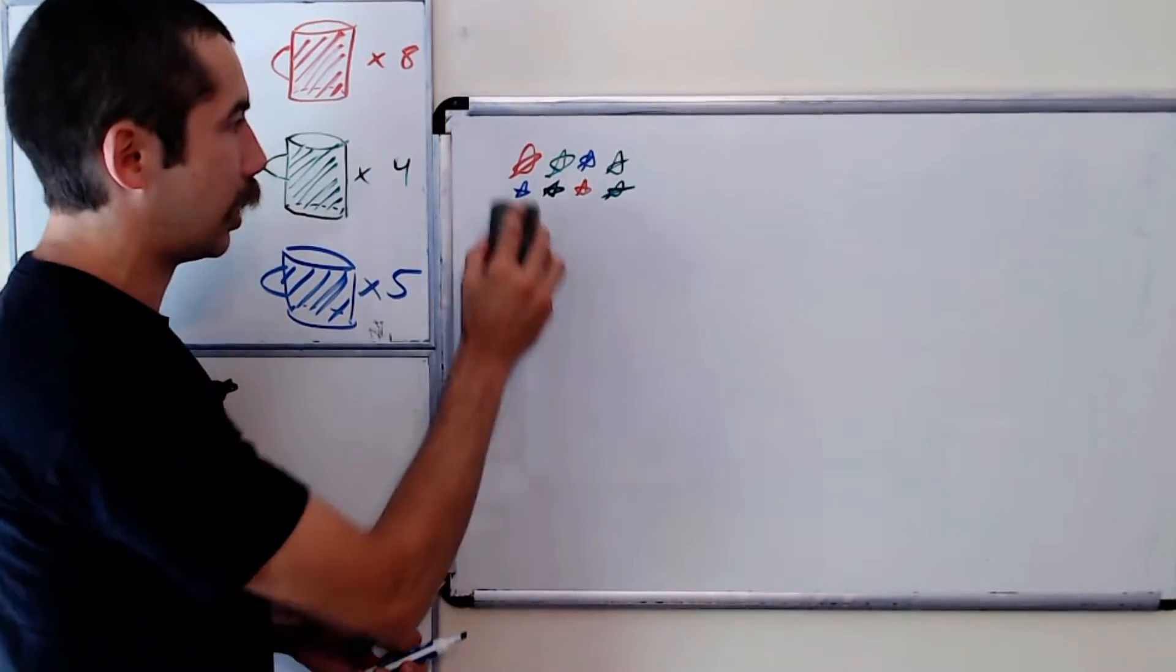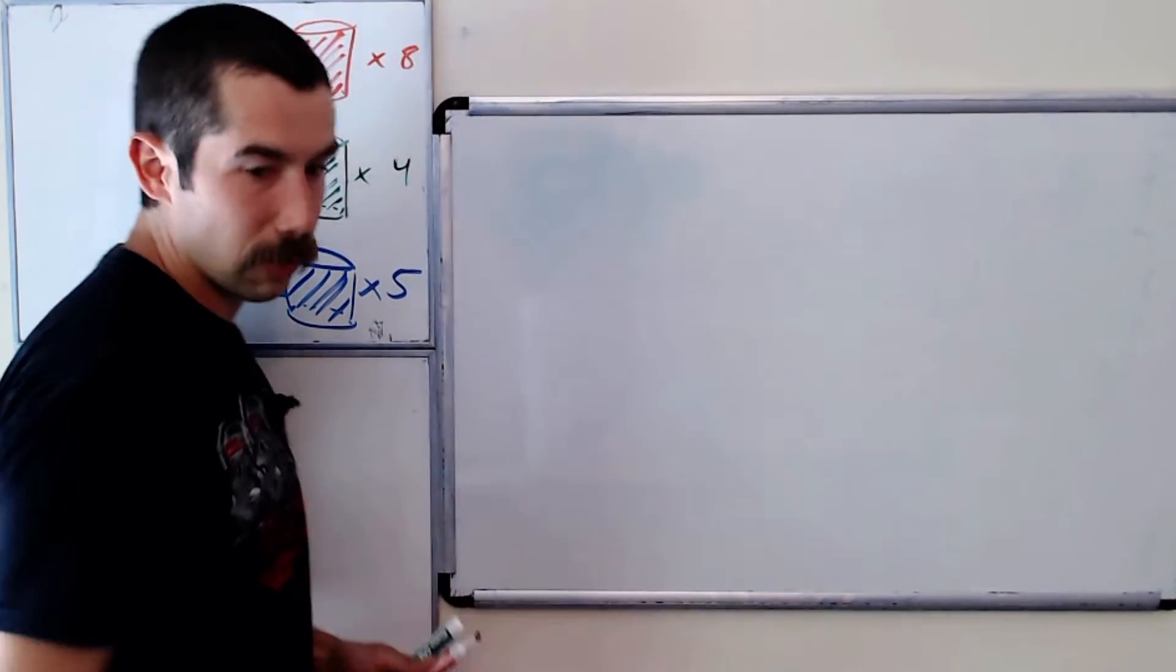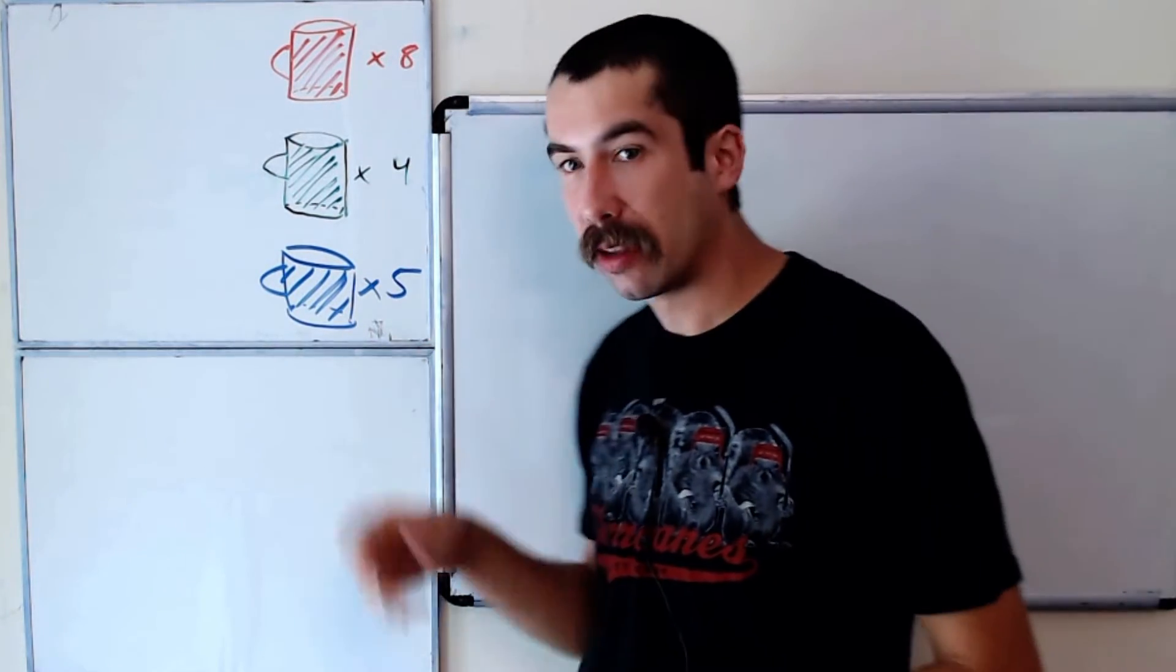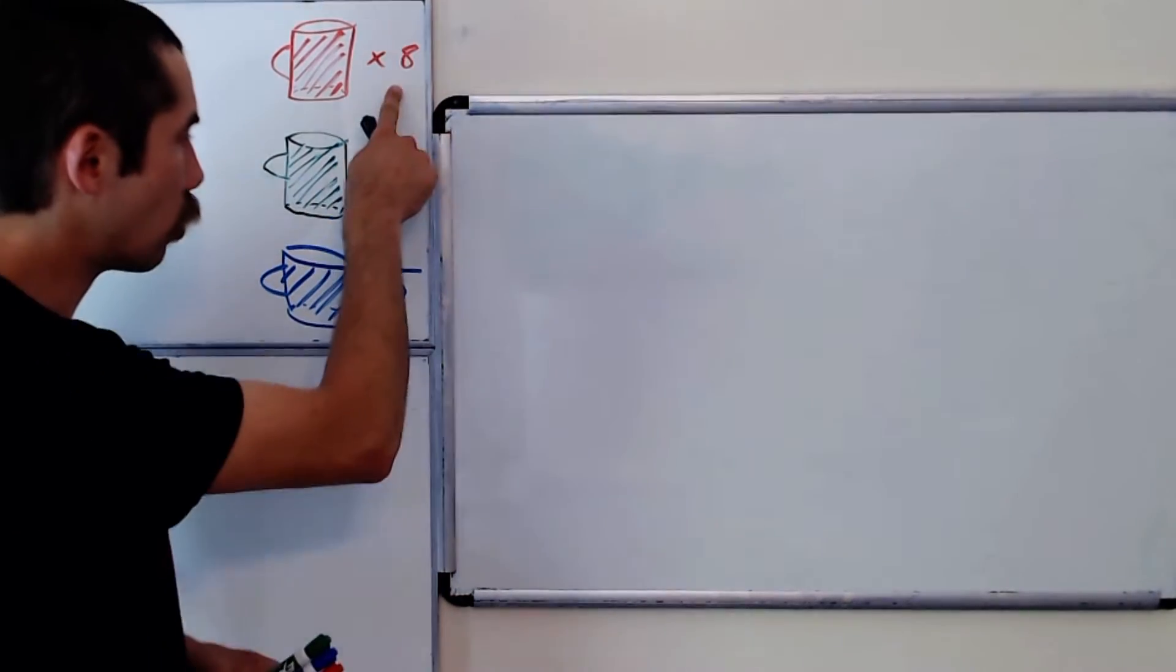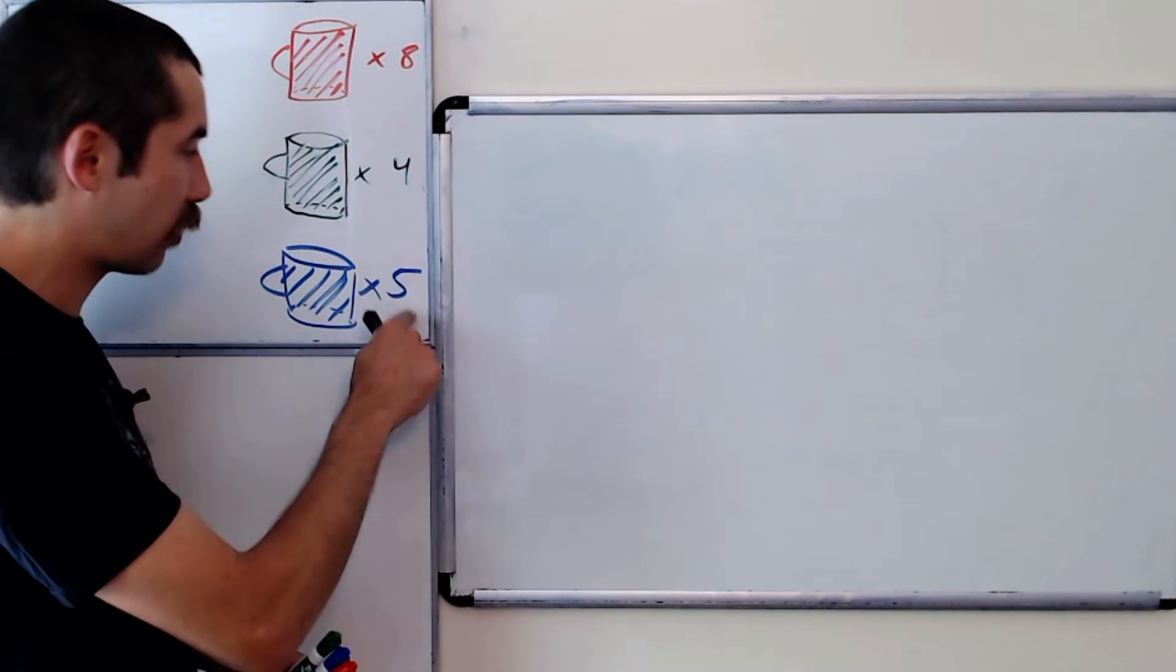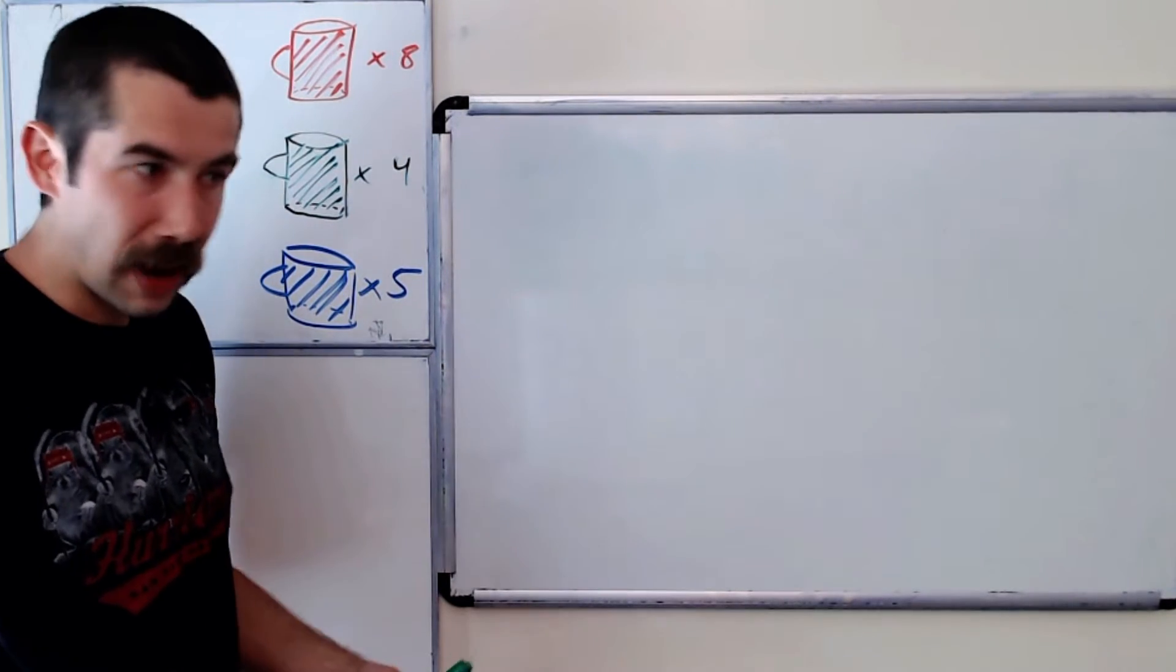So let's answer that question. Ignoring green, how many ways can we arrange the eight red mugs and the five blue mugs? Well, we're going to have a total of 13 mugs, right? Eight plus five mugs. And we need eight of them to be red and five of them to be blue.